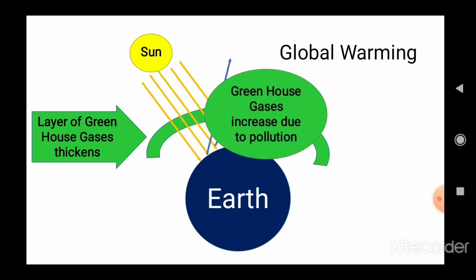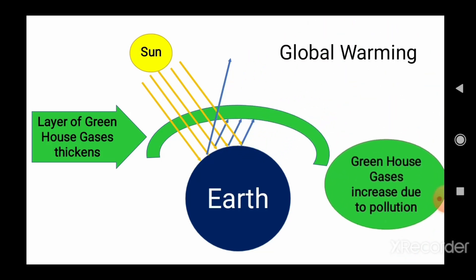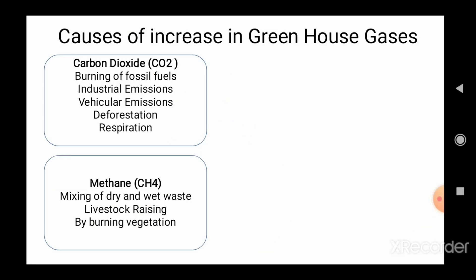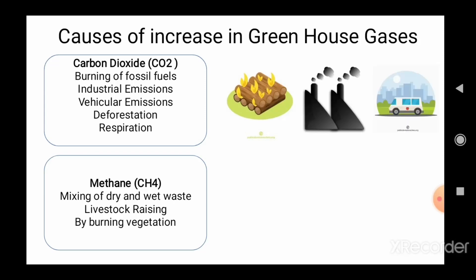This increase in greenhouse gases is due to pollution. Let's see how greenhouse gases are increased in the atmosphere. Carbon dioxide is responsible for over half the human contribution to greenhouse emissions. Carbon is emitted into the atmosphere by burning of fossil fuels, industrial emissions, vehicular emissions, deforestation, and respiration.